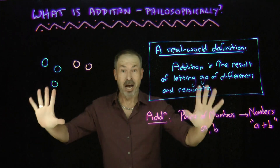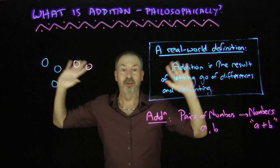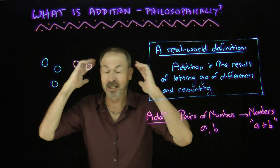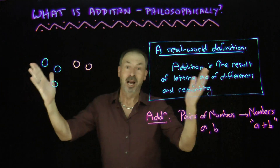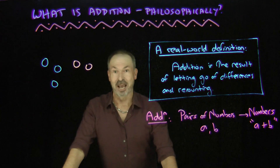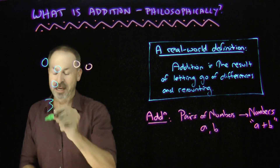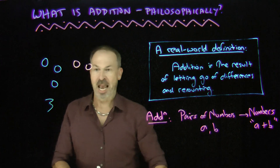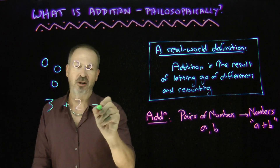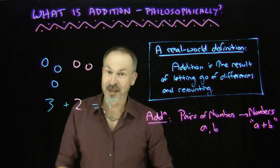Let's now let go of differences. Let's ignore they've got different colors and just say they're dots. If I let go of the difference of colors, I can now recount: one, two, three, four, five — there are five dots there. So I've just said that three green dots and two orange dots, if I ignore the differences, I can say there are in total five dots. That's an example of addition.